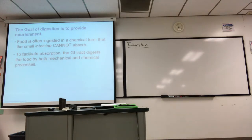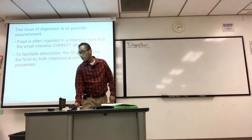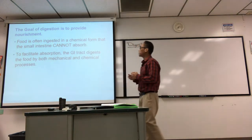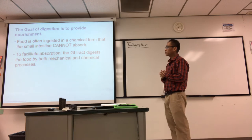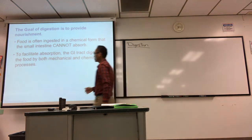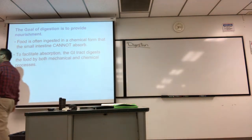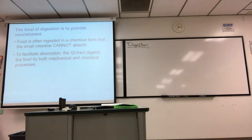We're going to start a new unit: digestion, chapter 23. Food is often ingested in a chemical form that the small intestine cannot absorb. So to facilitate absorption, the GI tract digests food by both mechanical and chemical processes.